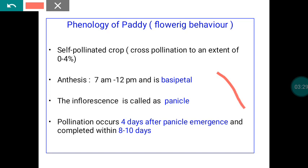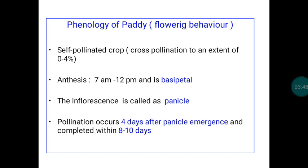The flower is arranged in a panicle. In basipetal order the topmost flower opens first and proceeds downward. The panicle will be ready for pollination four days after its emergence from the flag leaf. The flowering period is about 8 to 10 days. Some female parental lines used for hybrid seed production have a flowering period of 10 to 12 days.